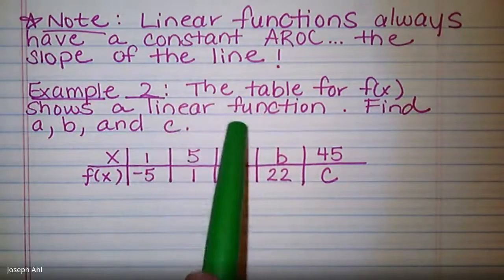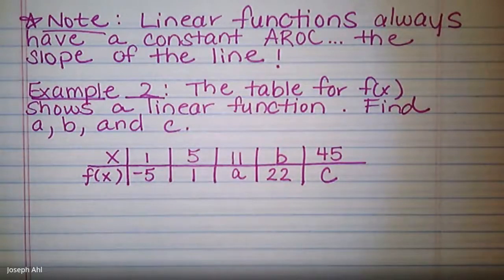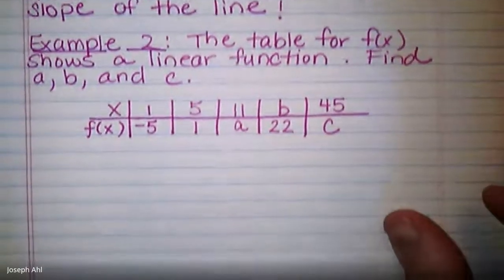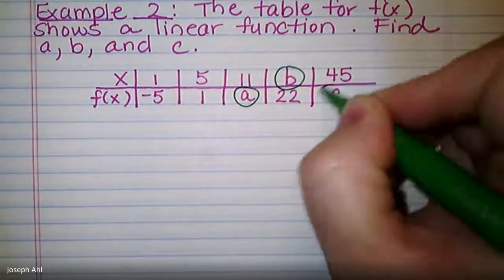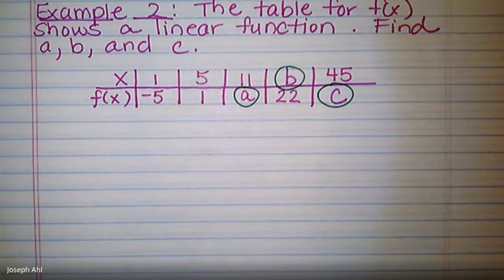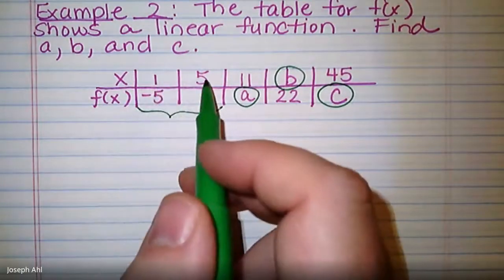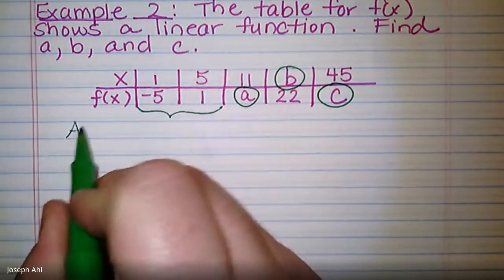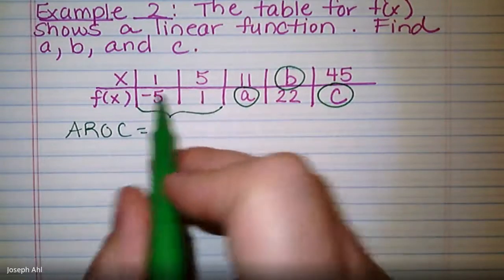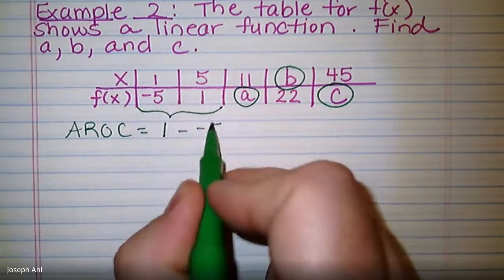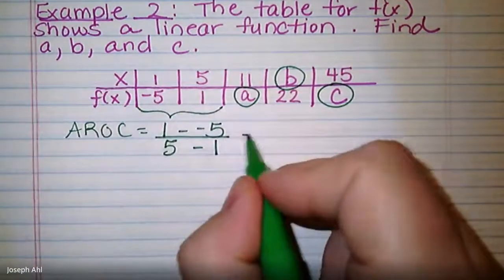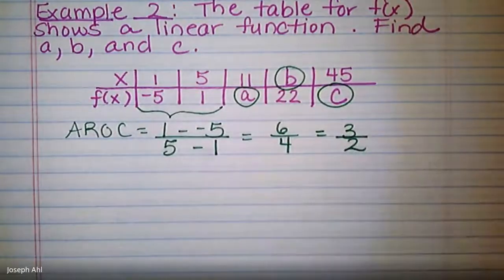Example 2: the table for f(x) below shows a linear function, and we're going to use this information to find the values of a, b, and c. You can see where a, b, and c are located — a is a y value, b is an x value, and c is a y value. Because linear functions have constant slopes, we can calculate the average rate of change between x = 1 and x = 5: (1 − (−5)) over (5 − 1) = 6/4, which reduces to 3/2.